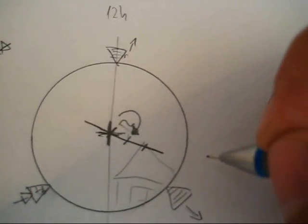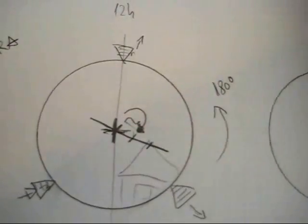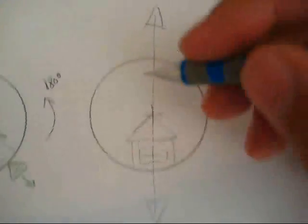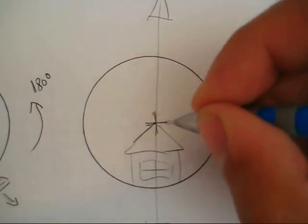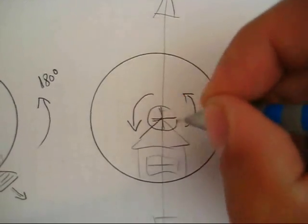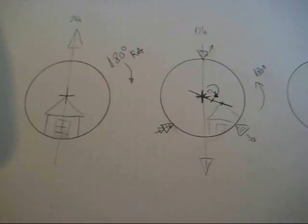So, it should look like this after you have aligned the mount again. Turn the axis 180 degrees again, and you will see if the error was corrected. If not, repeat this maneuver again and again until the error is gone.